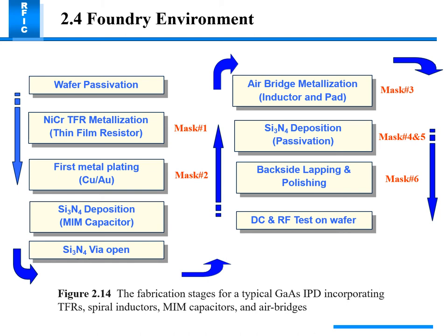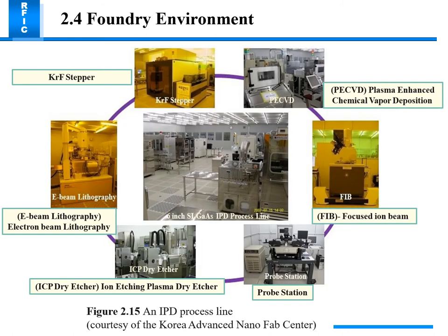The fabrication steps for a typical gallium arsenide IPD incorporating a TRF spiral inductor, MIM capacitor, and air bridges include: wafer passivation, ICR metallization, thin resistor deposition, pulse or metal plating, dielectric deposition, masking, air bridge metallization, another masking step, then testing, lapping, and polishing.